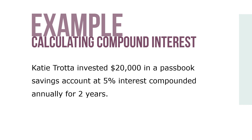Katie Torata invested $20,000 in a passbook savings account at 5% interest compounded annually for 2 years. Manually calculate the compound amount of the investment and the total amount of compound interest Katie earned.